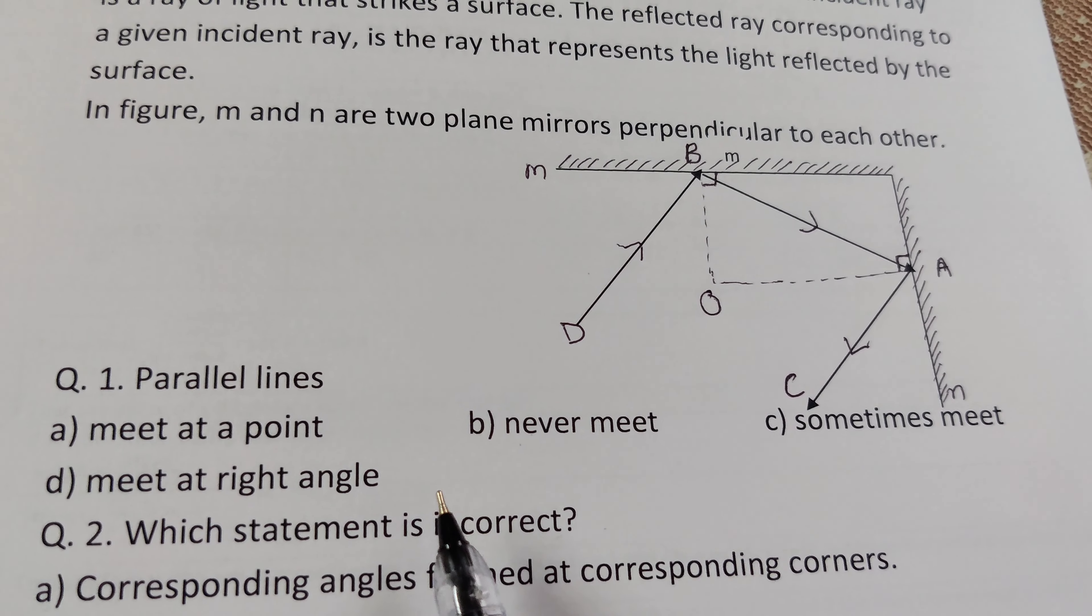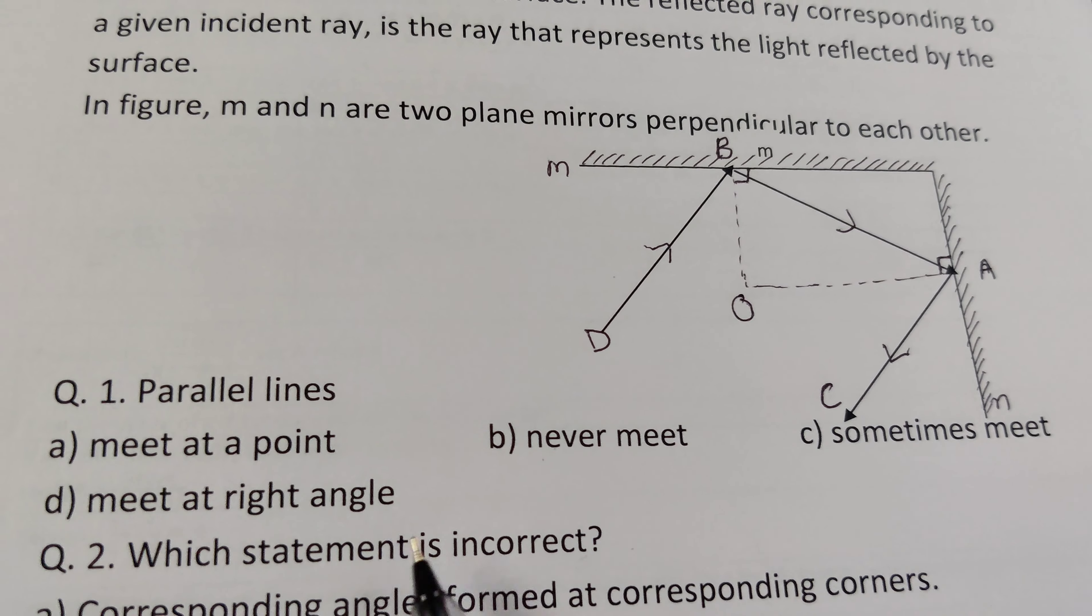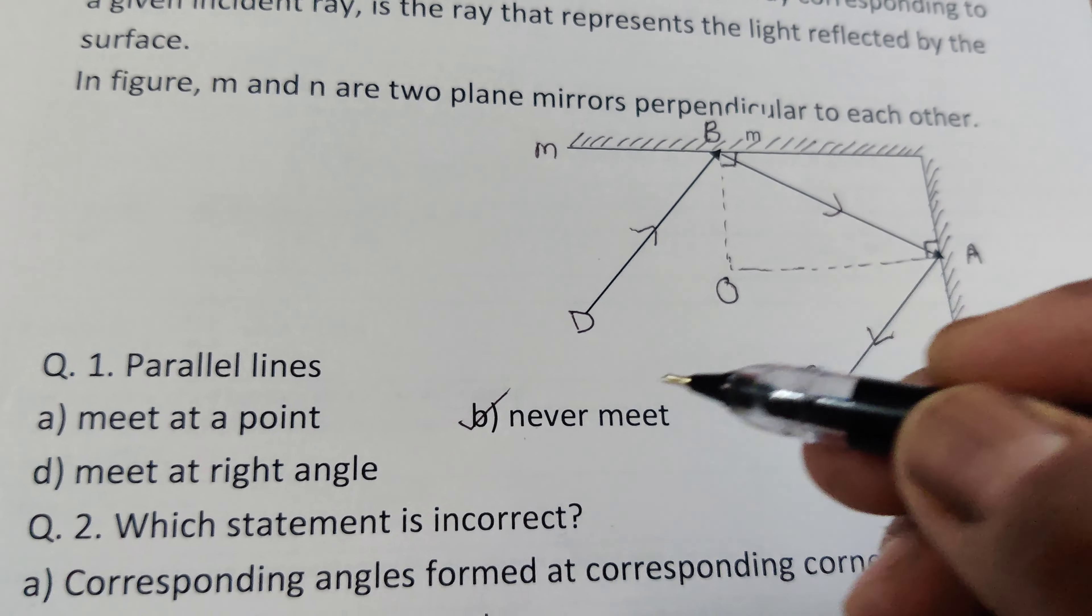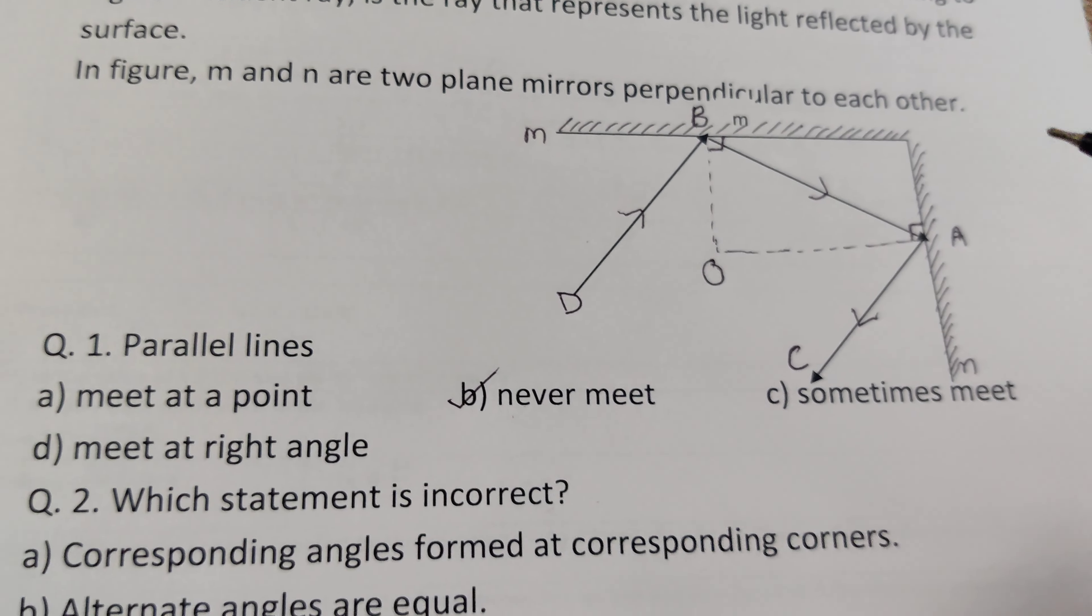Question number one: parallel lines a) meet at a point, b) never meet, c) sometimes meet, d) meet at right angle. It means parallel lines never meet. The perpendicular distance between two parallel lines remains the same.